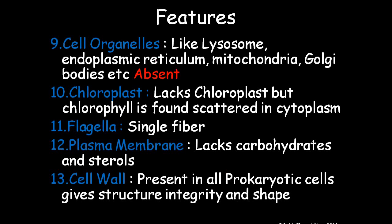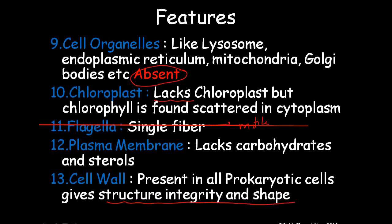Cell organelles: they lack organelles like lysosome, endoplasmic reticulum, mitochondria, and golgi — all these things are absent; there are no cell organelles in the prokaryotic cell. They also lack chloroplast, but chlorophyll is found in some cells, scattered in the cytoplasm. Flagella is a single fiber that helps in motility. The plasma membrane lacks carbohydrates and sterols. Cell wall is present in all prokaryotic cells and gives structure, integrity, and shape.